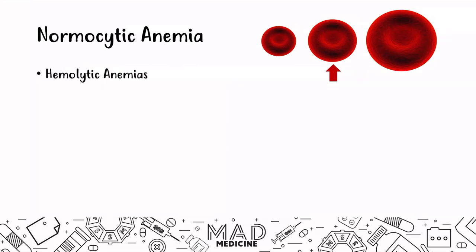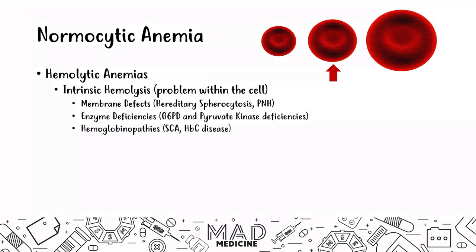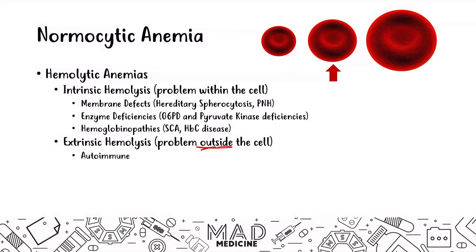When it comes to intrinsic causes, you have issues occurring within the red blood cell. These can be due to membrane defects, enzyme deficiencies, or hemoglobinopathy — issues with hemoglobin itself. Extrinsic causes are problems that occur outside of the cell, including autoimmune issues, microangiopathic and macroangiopathic disorders, and infections.